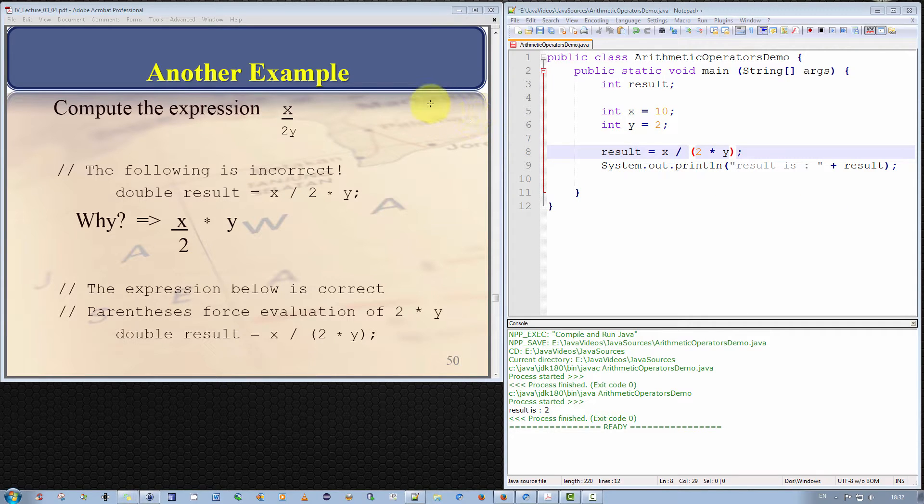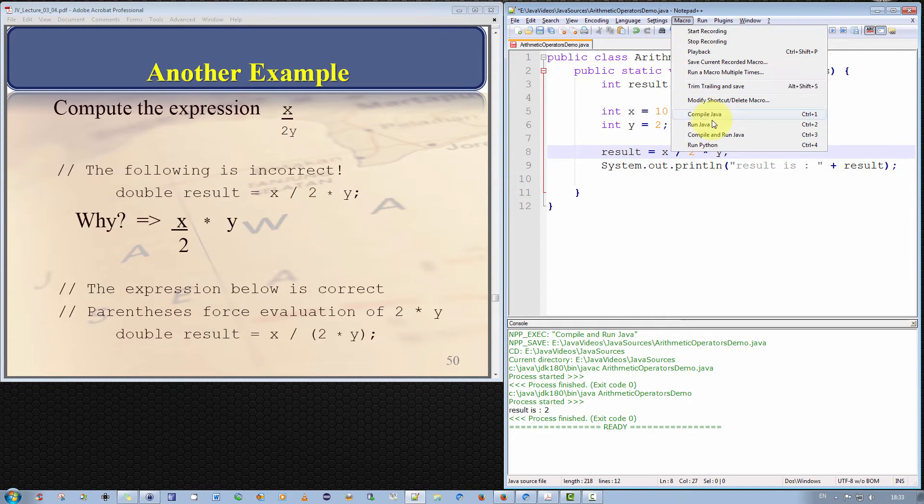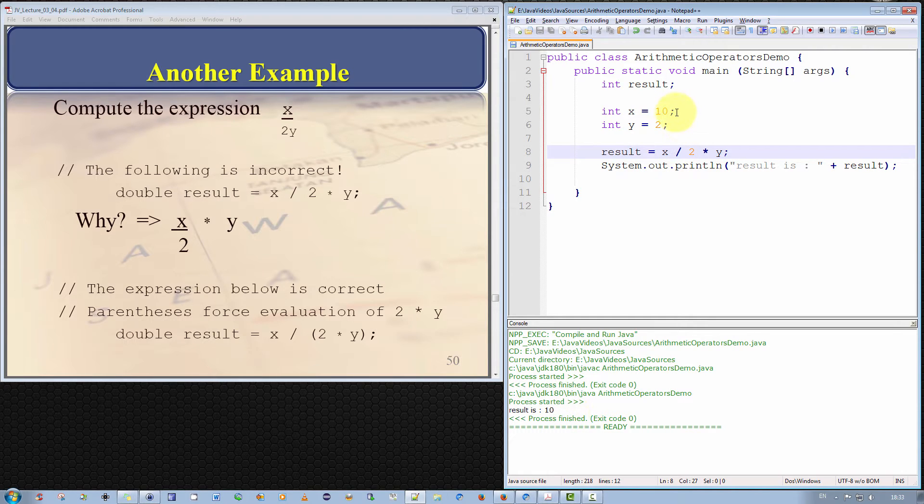In our example we wish to compute the expression x over 2y and I highlight the danger that if we did not use the parenthesis then due to operator precedence we would actually get the wrong result. We would actually have x divided by 2 which would be computed first because division and multiplication have the same operator precedence therefore the Java virtual machine will execute this statement from left to right. So x will be divided by 2 and that result will be multiplied by y. This is not the same operation as x divided by 2y. Let's actually run that just to demonstrate it. So that gives us a result of 10 because 10 divided by 2 is 5 and 5 multiplied by 2 is 10 but that's not what we want.